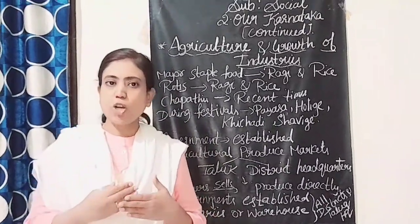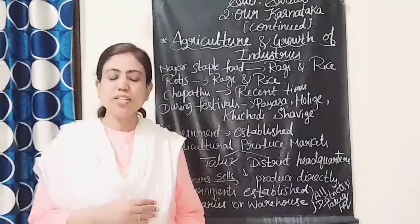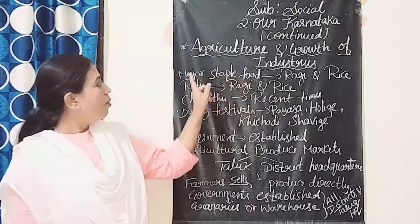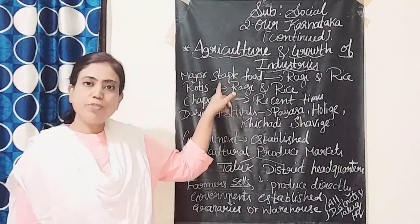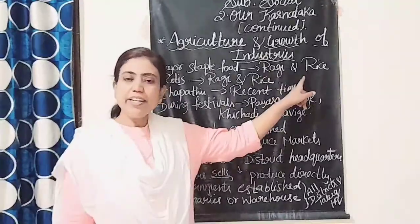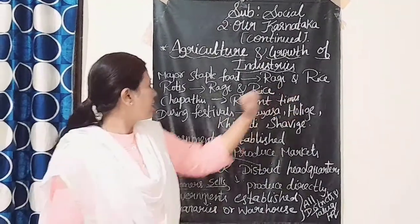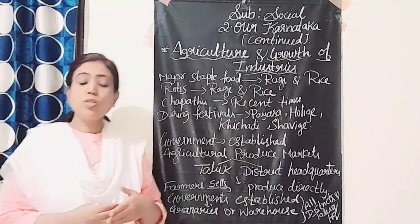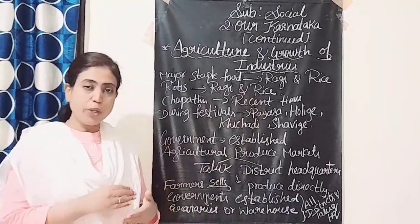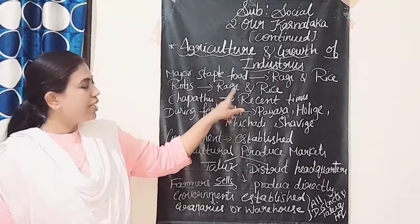The major crops grown in this division are ragi, maize, paddy, groundnuts, coconut, and areca nut. The major staple food in this division is ragi and rice — people here eat more ragi and rice, and their rotis are made from ragi and rice. In recent times, people are also eating chapati.